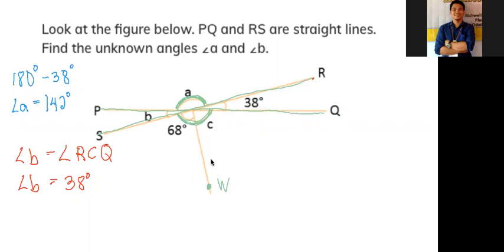Therefore, we can say that angle a, which is equal to 142, is equal to these two angles here. So to get angle WCQ or angle c, we can just subtract 68 from 142.